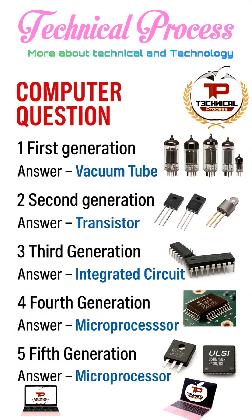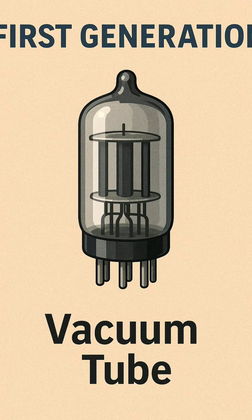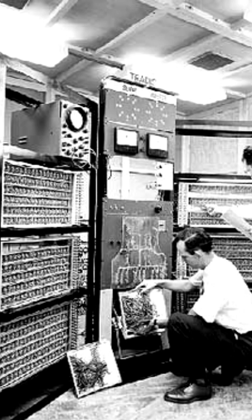First Generation of Computers — Vacuum Tube. These computers used vacuum tubes for circuitry. They were big, slow, and used a lot of electricity.